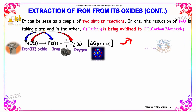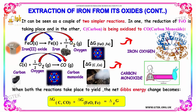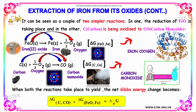This can be seen as a couple of two simpler reactions. In one, the reduction of iron oxide takes place — iron oxide gives iron and oxygen, and the delta G is that of Fe/FeO. In the other, carbon is being oxidized to become carbon monoxide, with delta G for C/CO. When both reactions take place together, the net Gibbs energy becomes delta G of C/CO plus delta G of Fe/FeO, equal to delta G of the overall reaction.